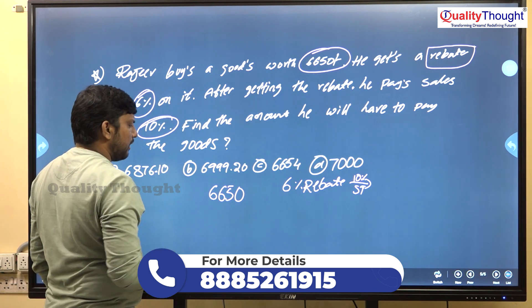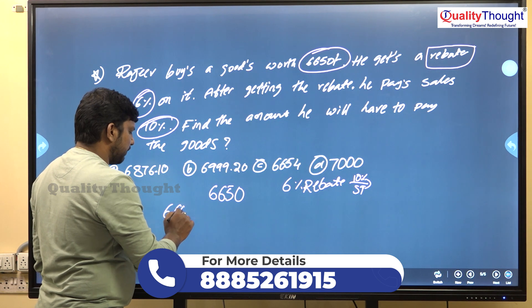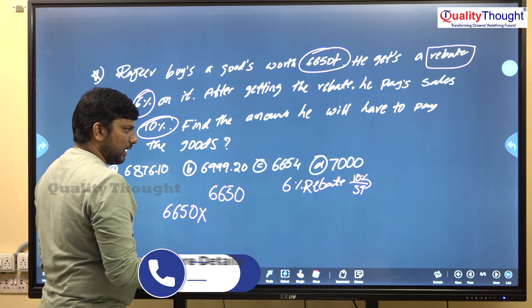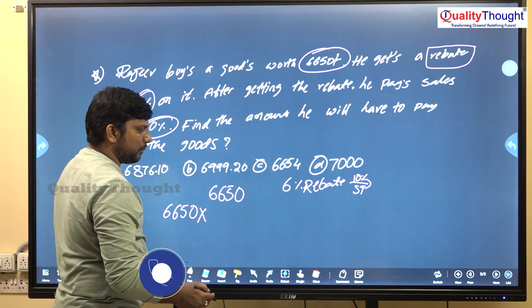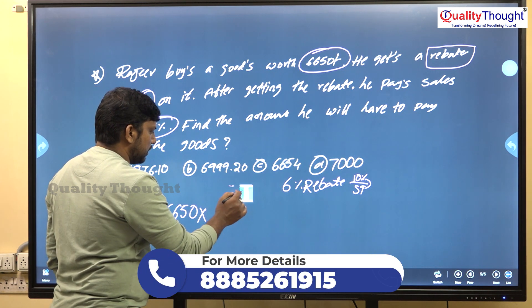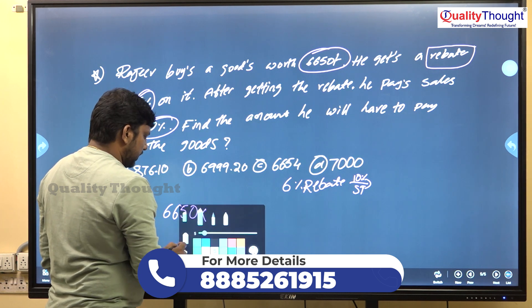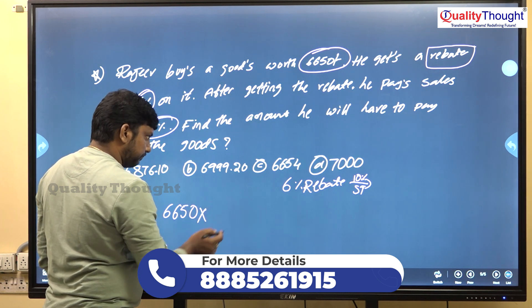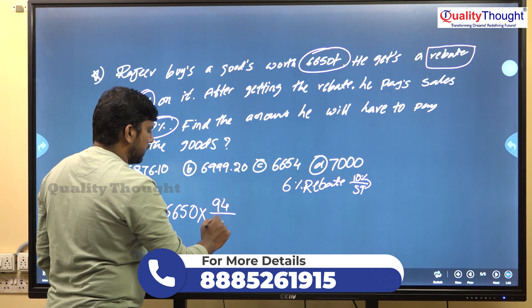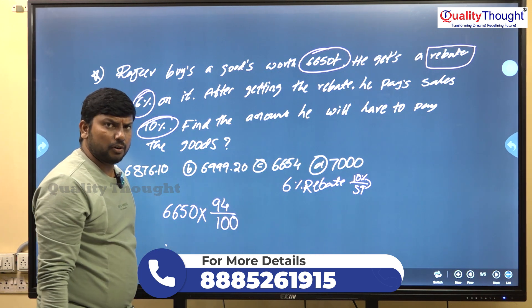Most students will calculate on 6,650 rupees directly. If there is a 6% rebate, that means you multiply by 94 by 100.